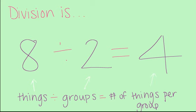So, if we have eight things, and we put the eight things into two different groups, we will have four things in each group. So, eight divided by two equals four.